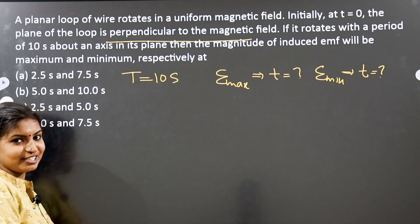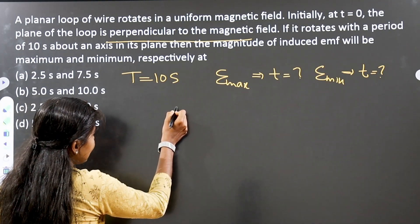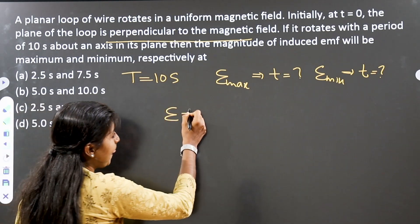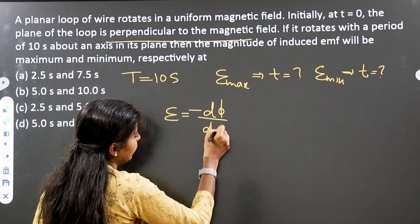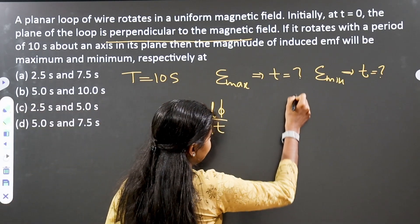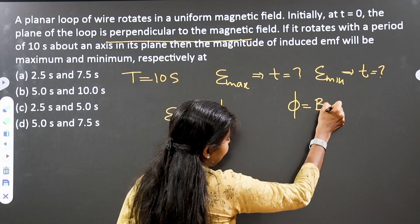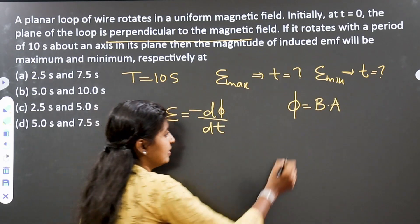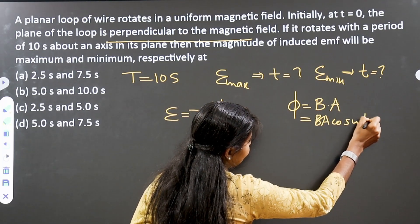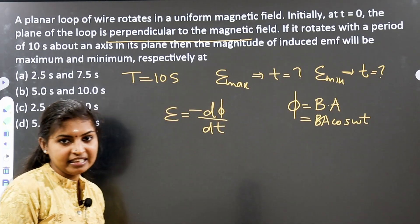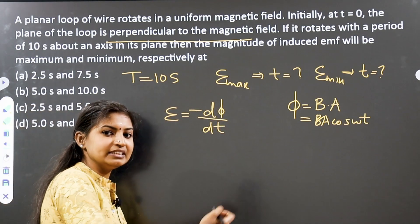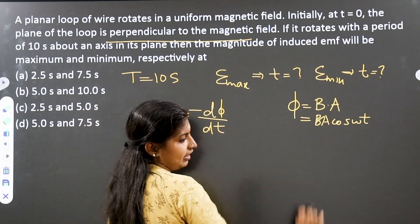According to Faraday's law, we have the equation: induced EMF equals minus dΦ/dt. The magnetic flux is equal to B dot A, that is equal to BA·cos(ωt), where theta equals ωt.